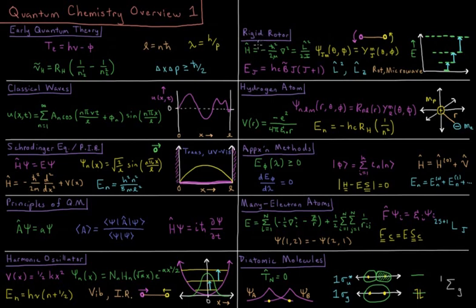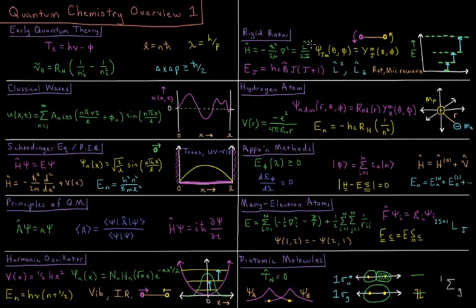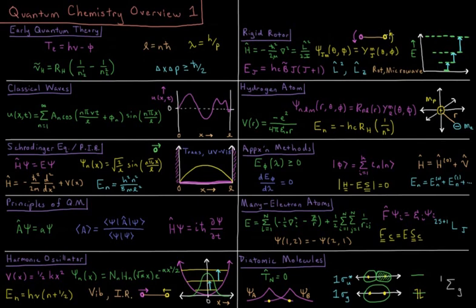The next model system is the rigid rotor, which models rotations of diatomic molecules in particular, giving us a way to get the microwave spectrum of molecules. The particle is free to rotate at a fixed bond length. The wave functions are the spherical harmonic functions with quantum numbers j and m in spherical polar coordinates theta and phi. The energies are quadratically spaced: E equals hcB-bar times j(j+1), where the rotational constant B depends on the bond length and the masses of the two atoms. This gives a series of lines that are linearly spaced, as the separation between energy levels increases going up.